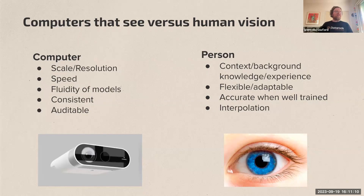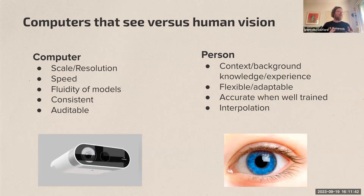People have their own benefits too. We're really good at using context, background knowledge, and experience to understand what we're seeing. We're very flexible and adaptable across changing imagery sets, and when well-trained for a task we can be very accurate. We're also great at interpolation — our brains can estimate what's behind an obscured object. But the key benefits of computer vision I'll focus on are speed, scale, and resolution, which are crucial to improving mining efficiency.